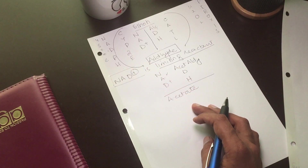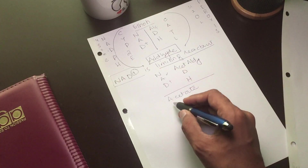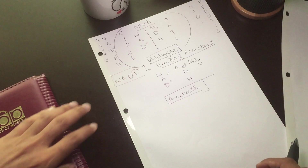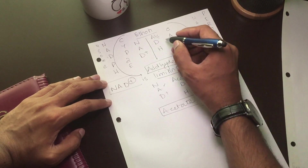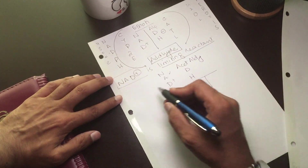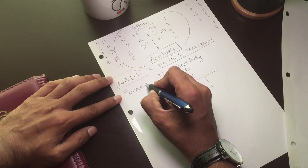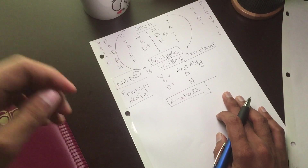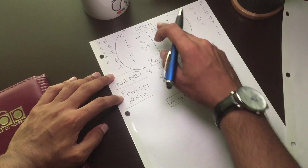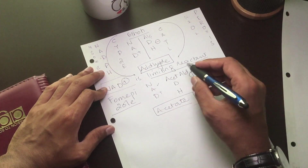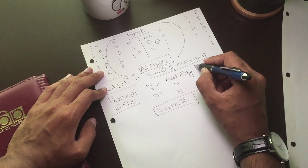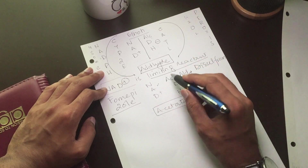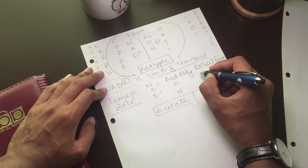The enzyme which inhibits alcohol dehydrogenase is fomepizole, which is used in alcohol intoxication as a competitive inhibitor of alcohol dehydrogenase enzyme. For acetaldehyde dehydrogenase, we give disulfiram, which inhibits the dehydrogenation by acetaldehyde dehydrogenase and increases the level of acetaldehyde to give hangover-like symptoms.